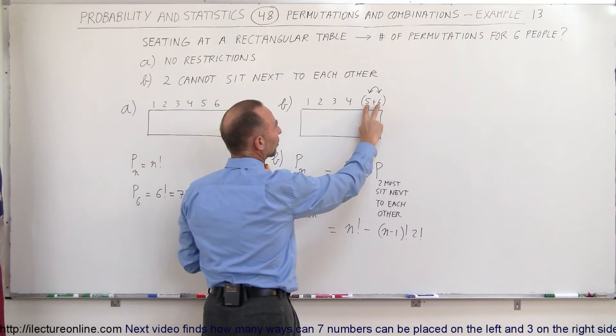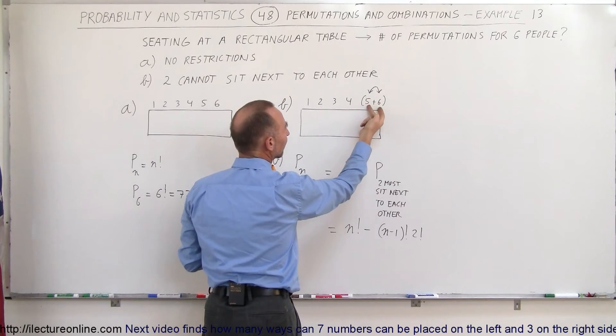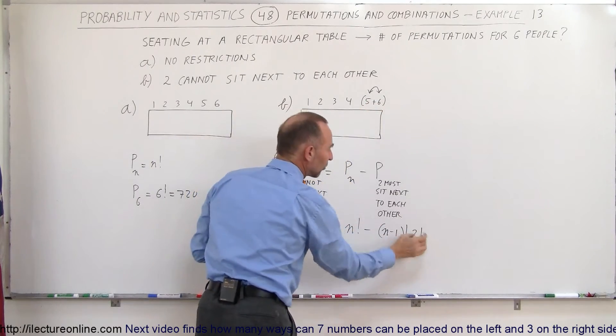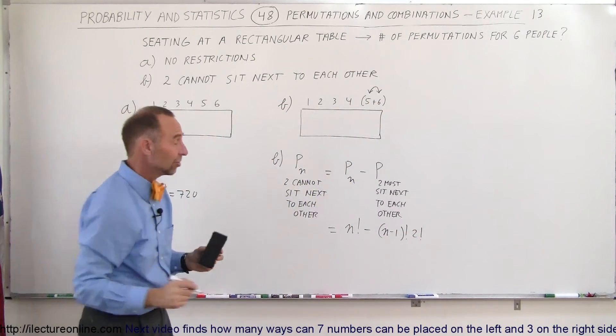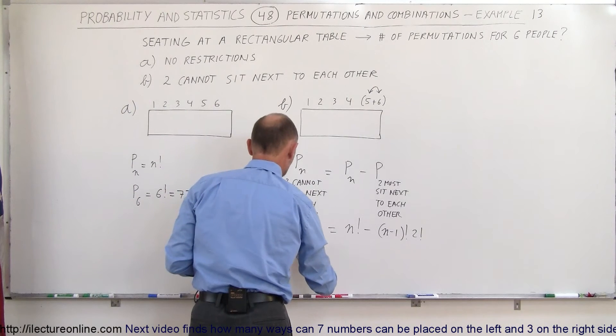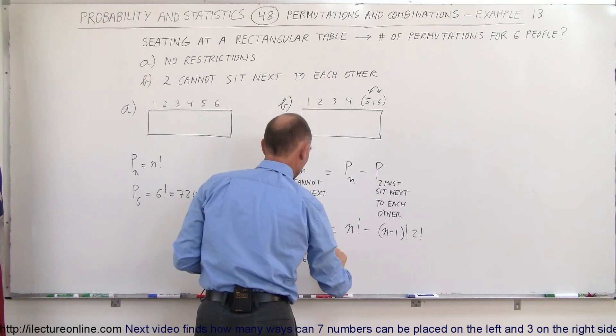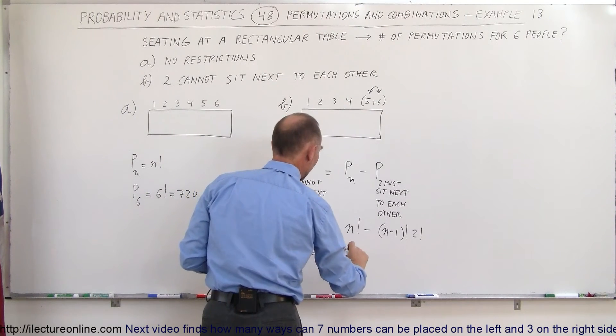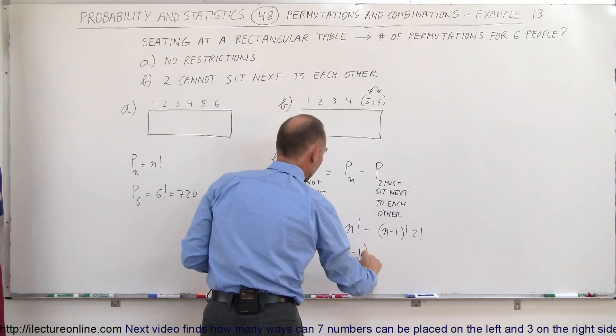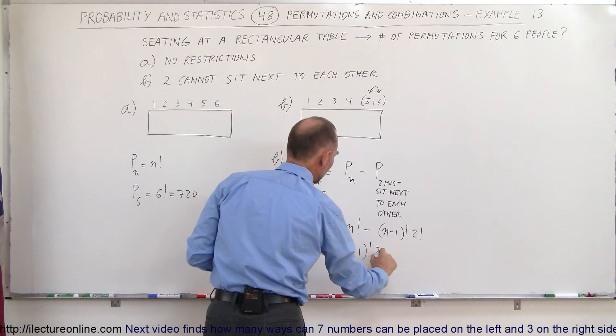Like that. So this one person can be switched around like that, and then you have two possibilities of setting that up. The answer then for P when there's six people, this equals six factorial minus six minus one factorial times two factorial.